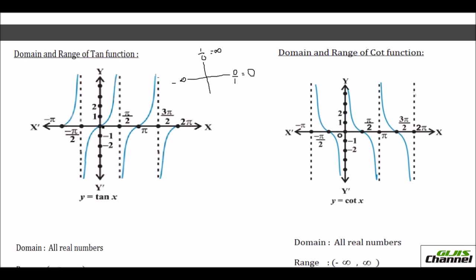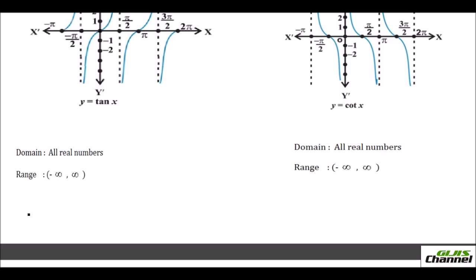At 0° the tan graph is 0. As the angle increases, tan values go through 0, 1/√3, 1, √3, and then infinity. Then at 180° (π) it starts from negative infinity and reaches 0 at π. From π to 270° it increases again to positive infinity. The range of the tan function is negative infinity to positive infinity — all real numbers.